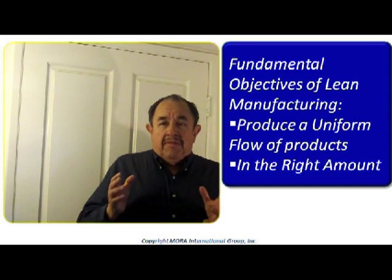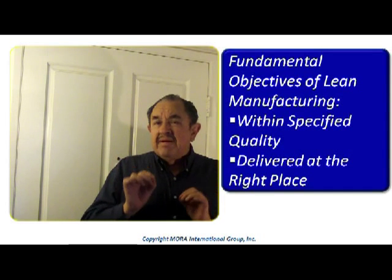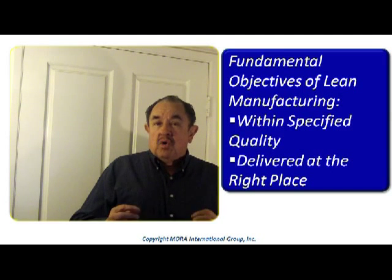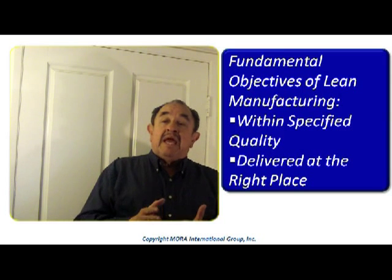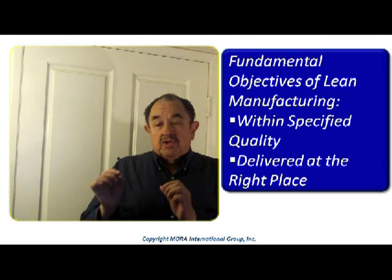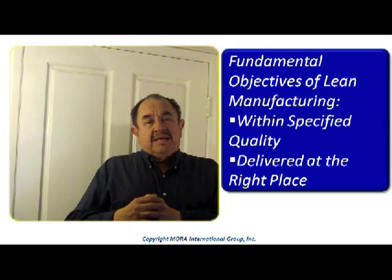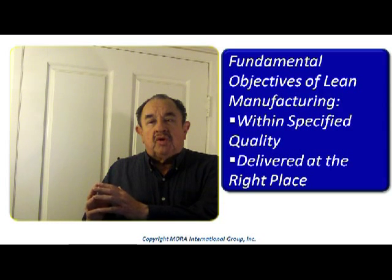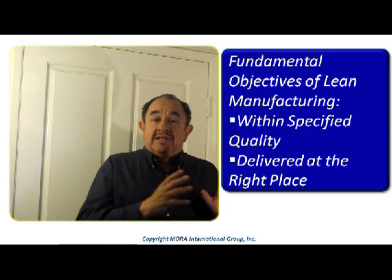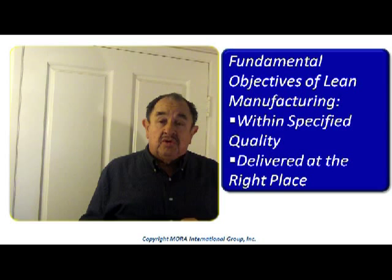Another objective that is critical in lean manufacturing is quality. We want to make sure that everybody knows what is the quality specified for the product. The better they know the specifications of quality, the better they will be able to comply with those. Sometimes you need to furnish photographs or parts that are well done so that people can understand the critical aspects of that quality. The next step is to make sure that we deliver every part in the right spot, so that it is finished and in its right place either for sale or for the next operation.